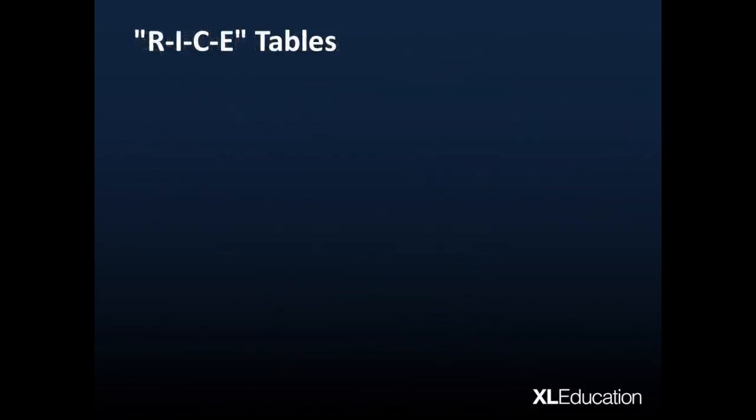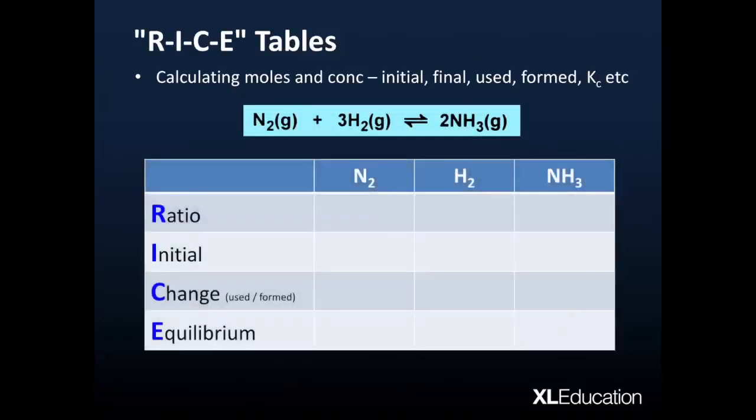Let's look at how we then use RICE tables to do a calculation of this Kc. Now RICE is a little acronym that tells us the various different aspects of the reaction as it progresses, and this table is going to include moles and or concentration. It's things like the initial number of moles, the final number of moles, etc. So let's use the one that we've already been using, creating ammonia from nitrogen and hydrogen. The first line, R, stands for ratio. And the ratio is basically the ratio of coefficients from the actual equation. So it's a 1 to 3 to 2 ratio. So we can fill in those numbers at the top of our table there.